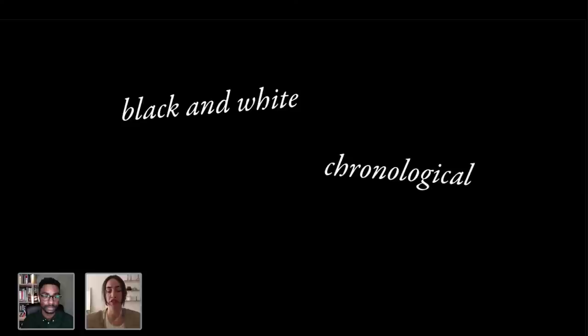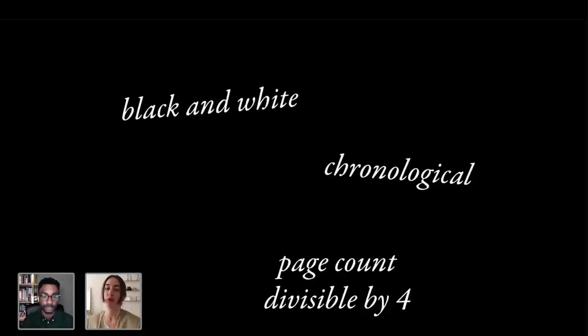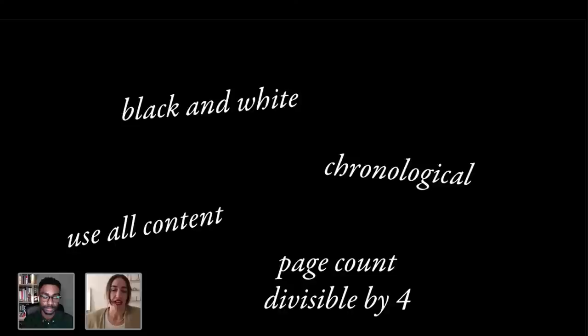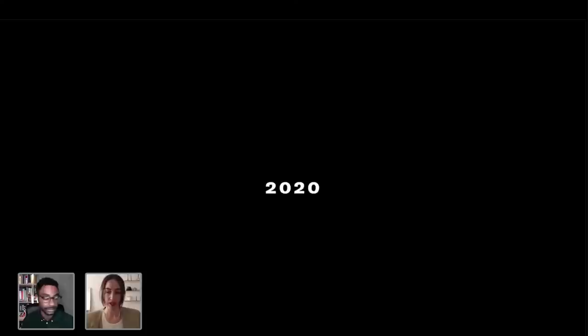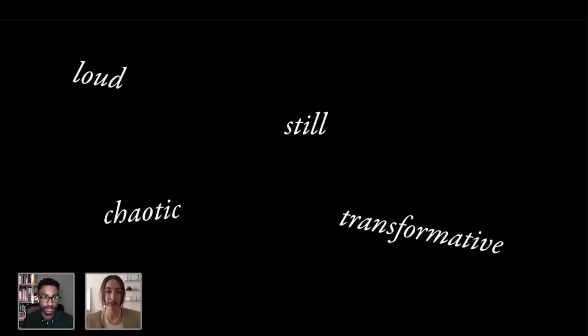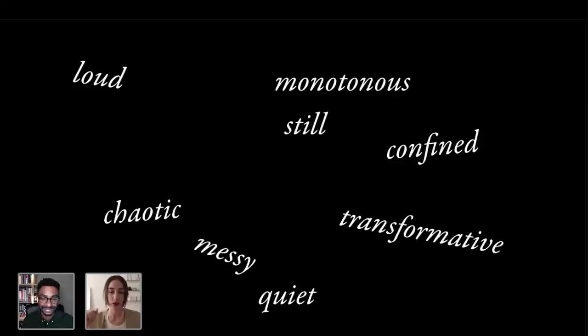The task here is we are designing a typographic zine. I find it's helpful to work within limitations — kind of set these rules for yourself so we have some boundaries to work within. The limitations: we are going to be doing all black and white, no color. This is a documentation of 2020, so we're going to go chronologically. The page count will need to be divisible by four, as this is something we are going to print and will eventually be saddle stitched.